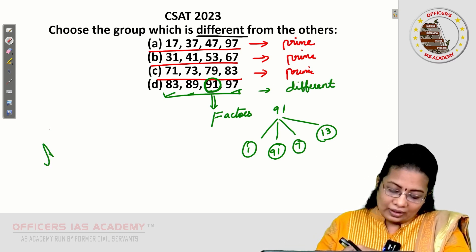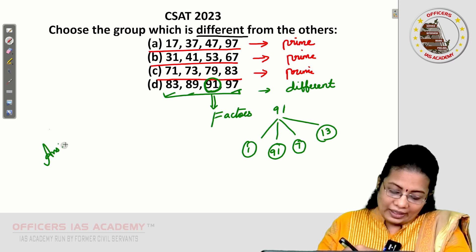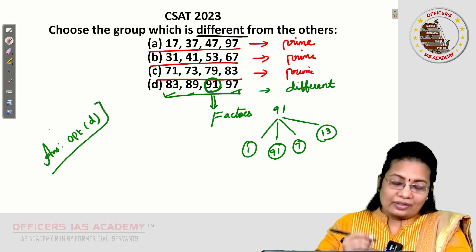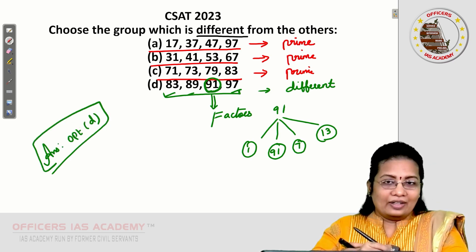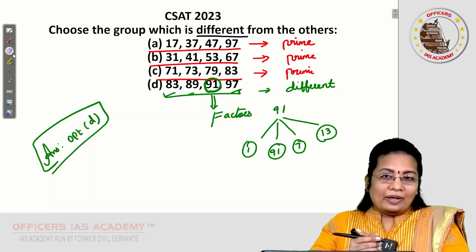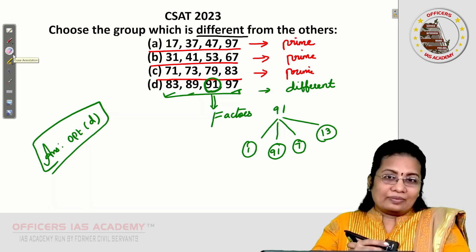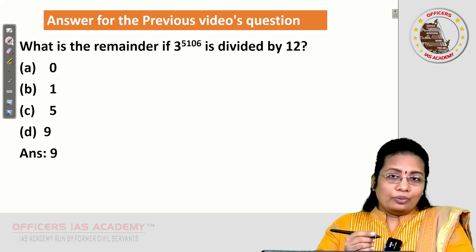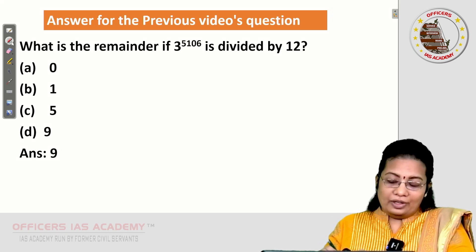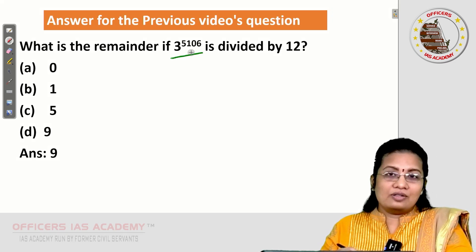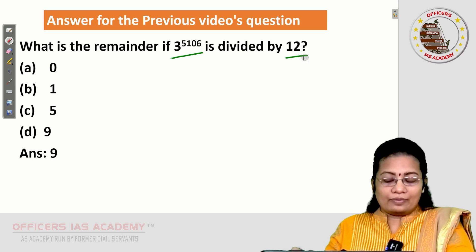The answer is option D. Now let's see the answer for the previous video's question: what is the remainder if 3 to the power 5106 is divided by 12?